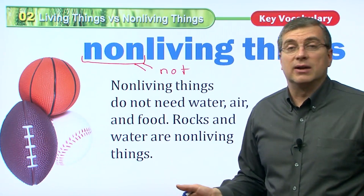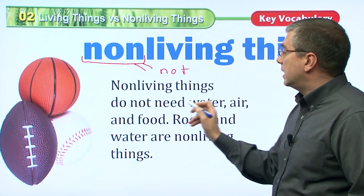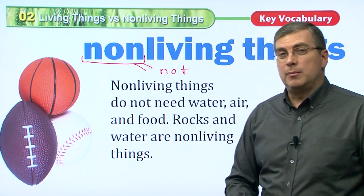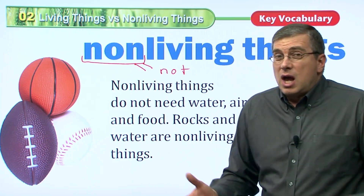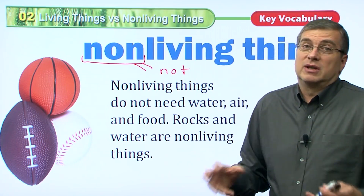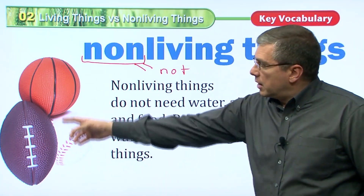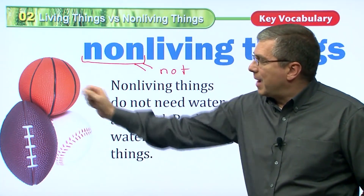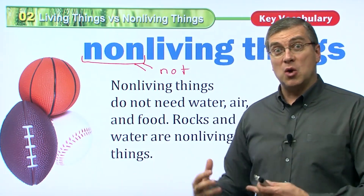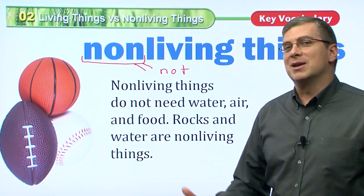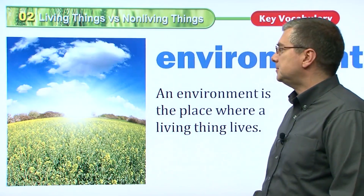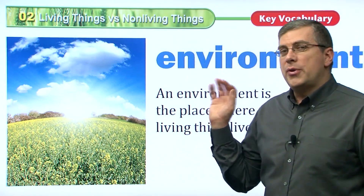As opposed to non-living things — 'non' of course means 'not.' Not living means that they're not alive. Non-living things do not need water, air, or food. Rocks and water are examples of non-living things. They don't have bodies, they don't have parts that move. A football, a basketball, a baseball — those things are not alive.